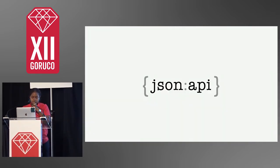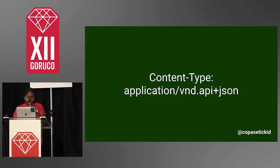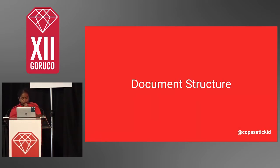The JSON API spec is for delineating how clients should request or edit data from a server, and how that server should respond to those requests. Its main goal is to optimize HTTP requests — mostly the number of requests you're making and the size of the data coming back. One way to start doing that is by using this content type, so the server knows what it's getting is the JSON API content header.